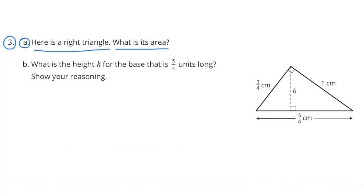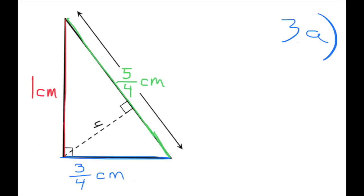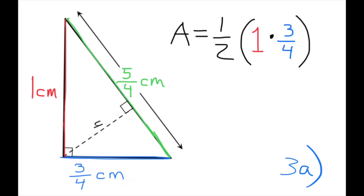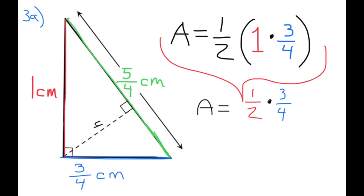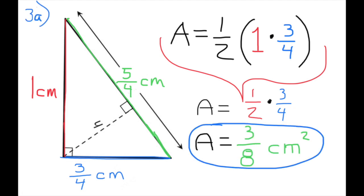Number three, part a: Here is a right triangle — what is its area? I've flipped the triangle on its side so you can recognize it as a right triangle. To find the area, multiply one-half times base times height. Here it is one-half times one times three-fourths, so the area is three-eighths centimeters squared.